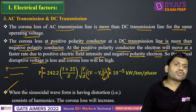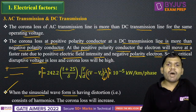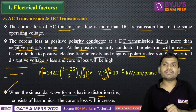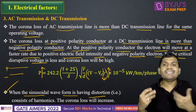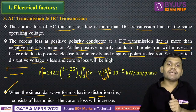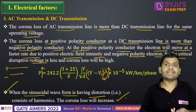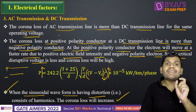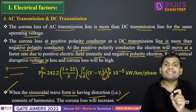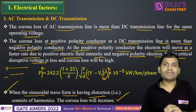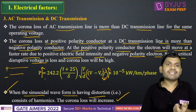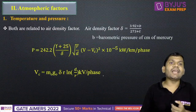One more point to remember: when the sinusoidal waveform has distortion — that is, when it contains harmonics — the corona loss also increases. The main reason why corona loss is more for AC transmission is because of the harmonics. Because of the harmonics, the corona loss is high for AC transmission. All these are the electrical factors.